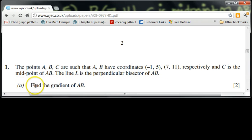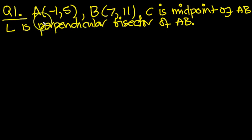The first part of the problem, part A, find the gradient of AB. I've written all the information down here. A is minus 1, 5, B is 7, 11. C is the midpoint of AB. L is the perpendicular bisector of AB. So part A, the gradient AB.